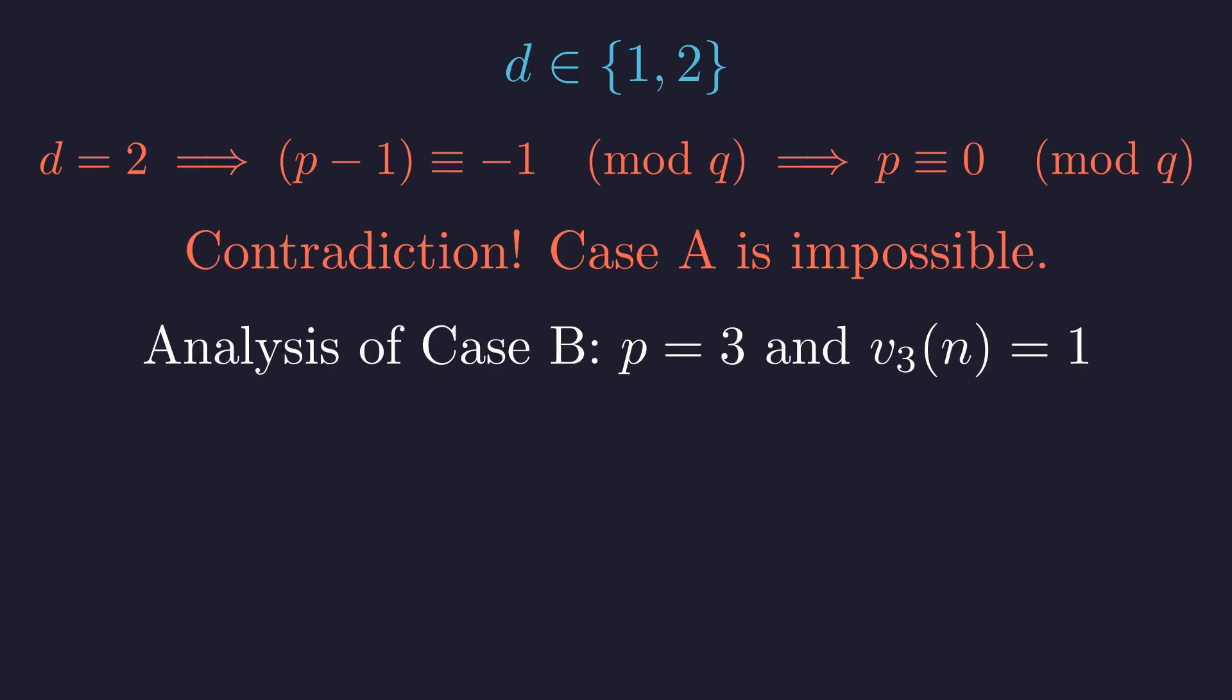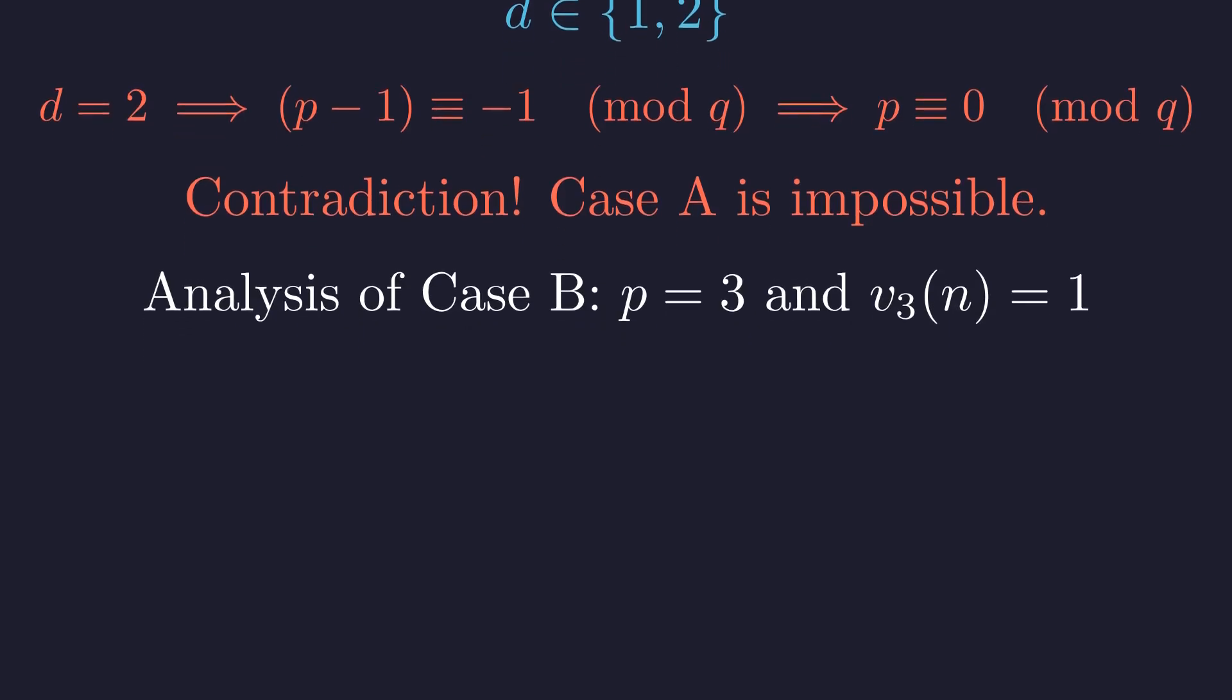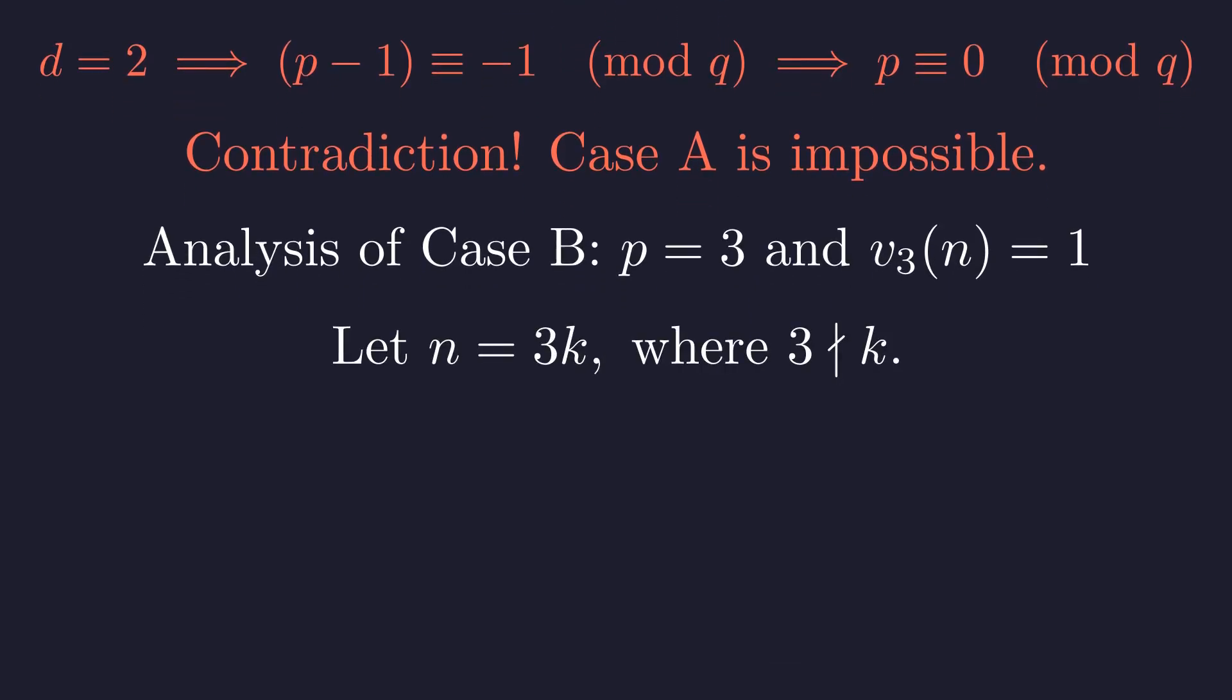This leaves only case B. Here, p must be 3 and v_3(n) must be 1. This means n is a multiple of 3, but not of 9. We can write n as 3 times k, where k is not divisible by 3. Since n is odd, k must also be odd.